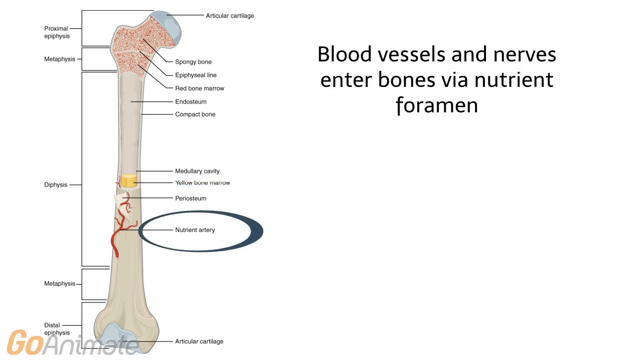Blood vessels and nerves enter bone through nutrient foramen, which are small holes in the diaphysis. They carry important nutrients for development and maintenance of bone.